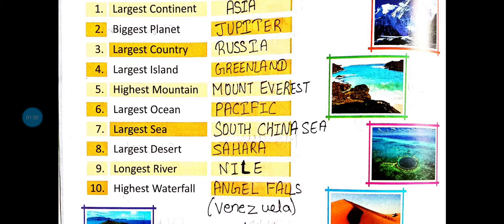Sixth: largest ocean — the answer is Pacific, P-A-C-I-F-I-C, Pacific Ocean. Seventh: largest sea — the answer is South China Sea. S-O-U-T-H, South. C-H-I-N-A, China. South China Sea.